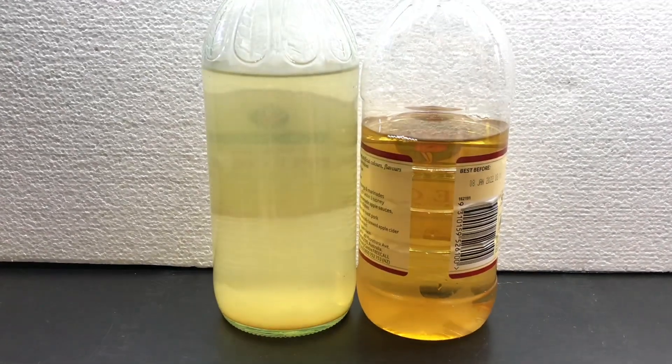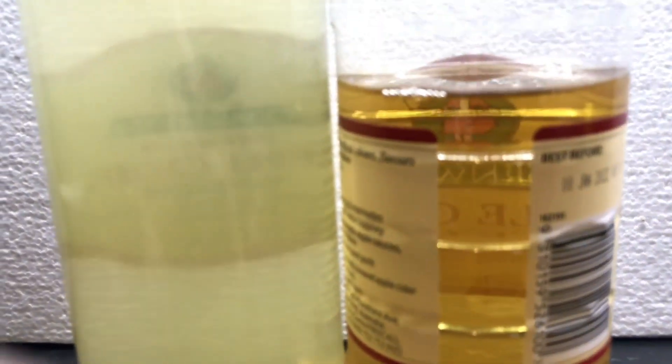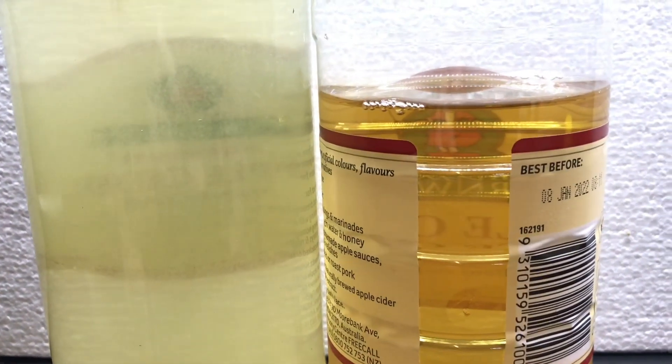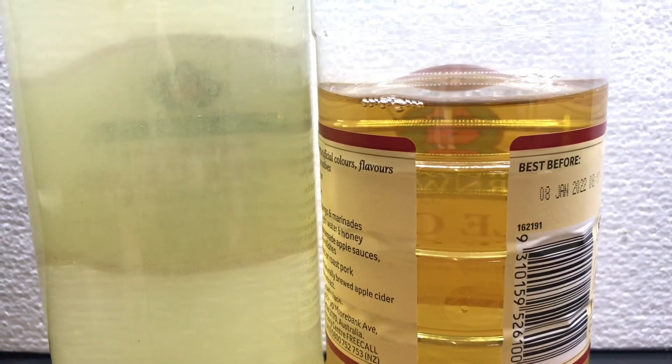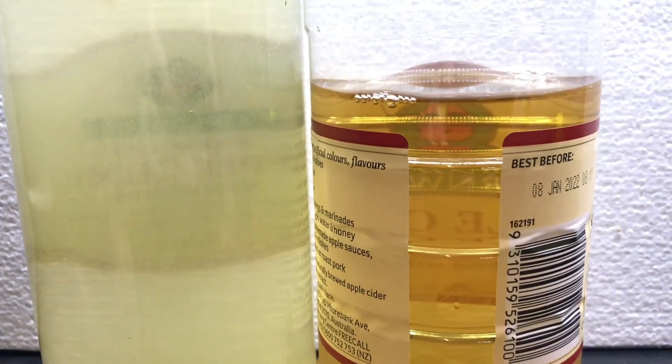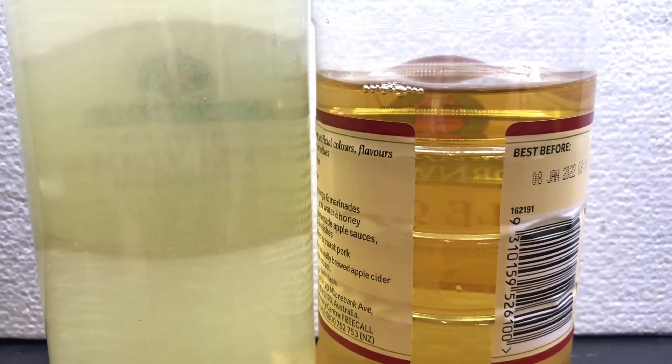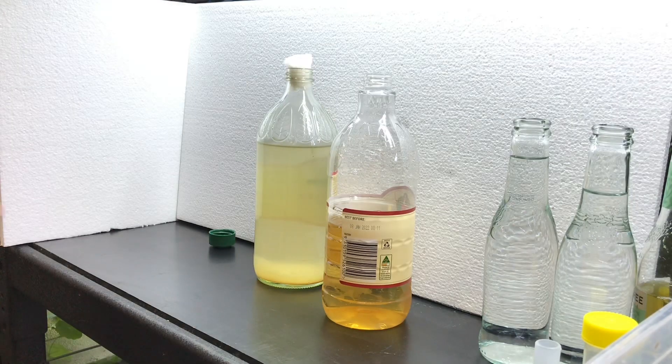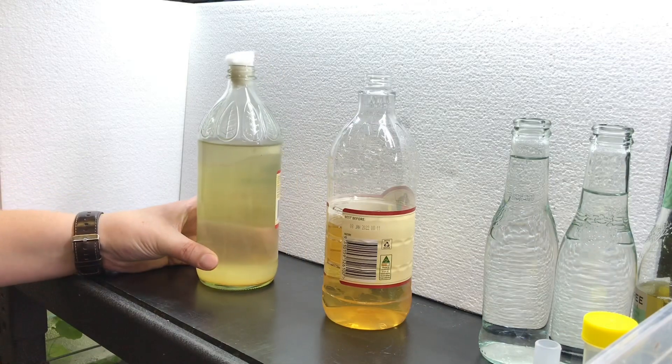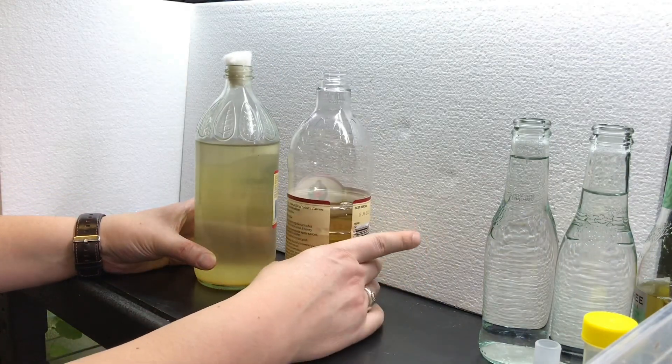When you compare the colors of the two bottles with the pure apple cider vinegar on the right and the established culture on the left, you can see how the color of the culture changes as your culture is developed and crawling with vinegar eels.